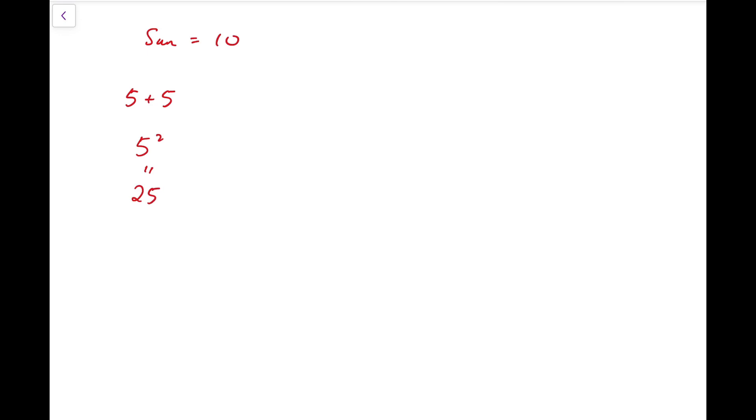Or we can further split it into 5 twos instead. We will have the product to be 2 to the 5, and that's 32. From this example, we have an intuition that the smaller numbers we split into, the product is actually larger.